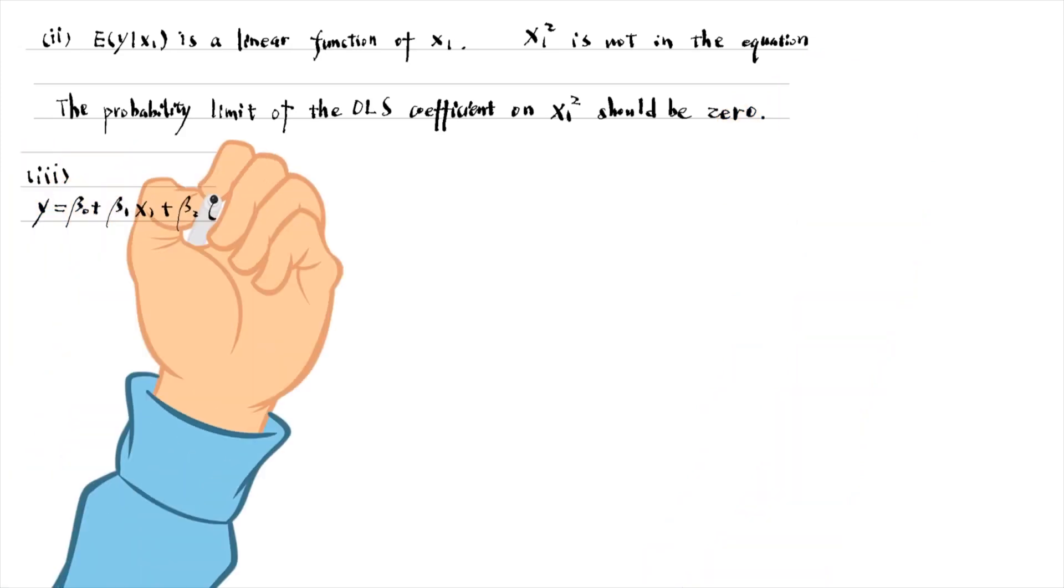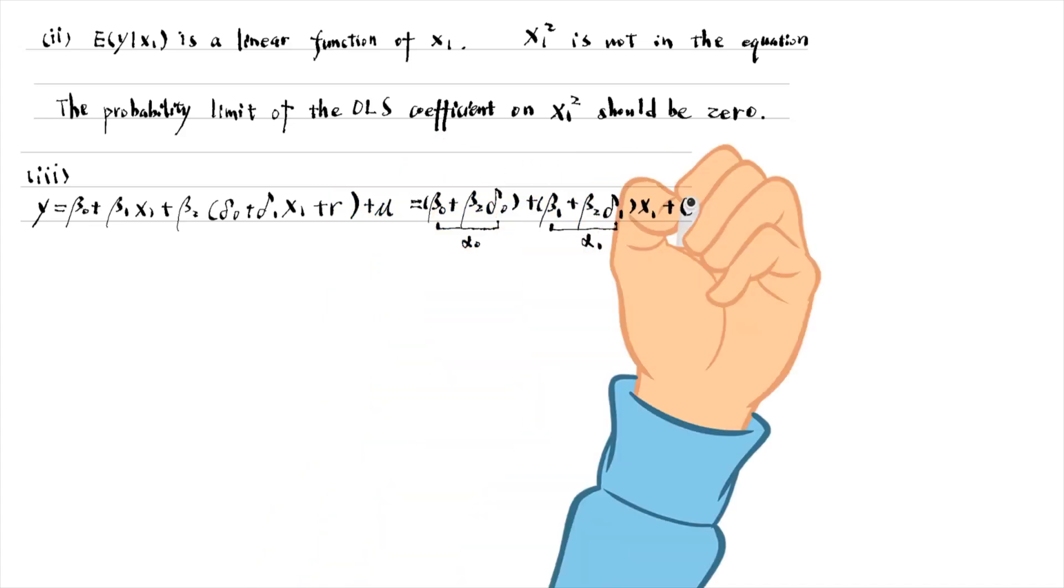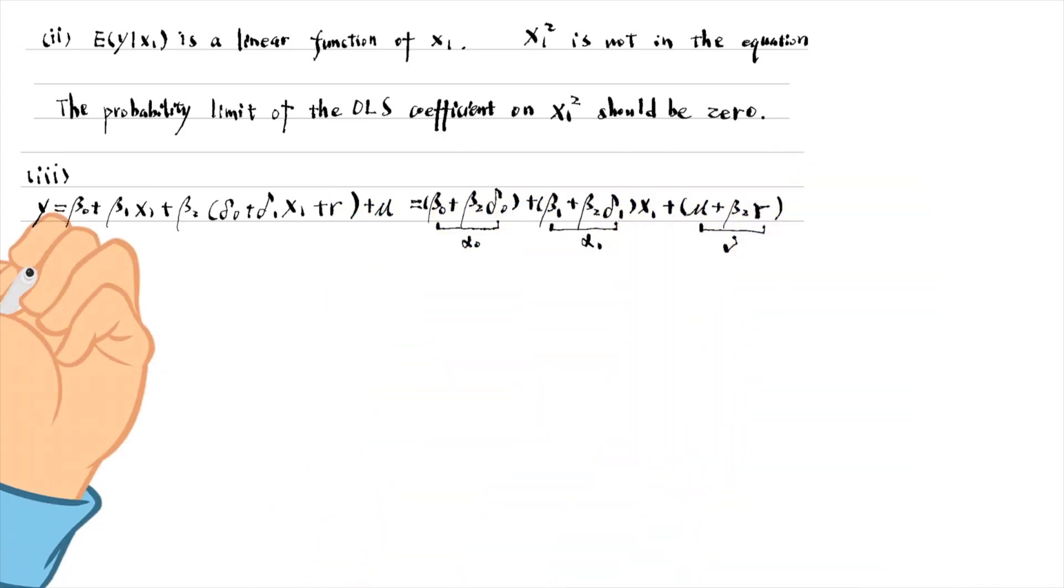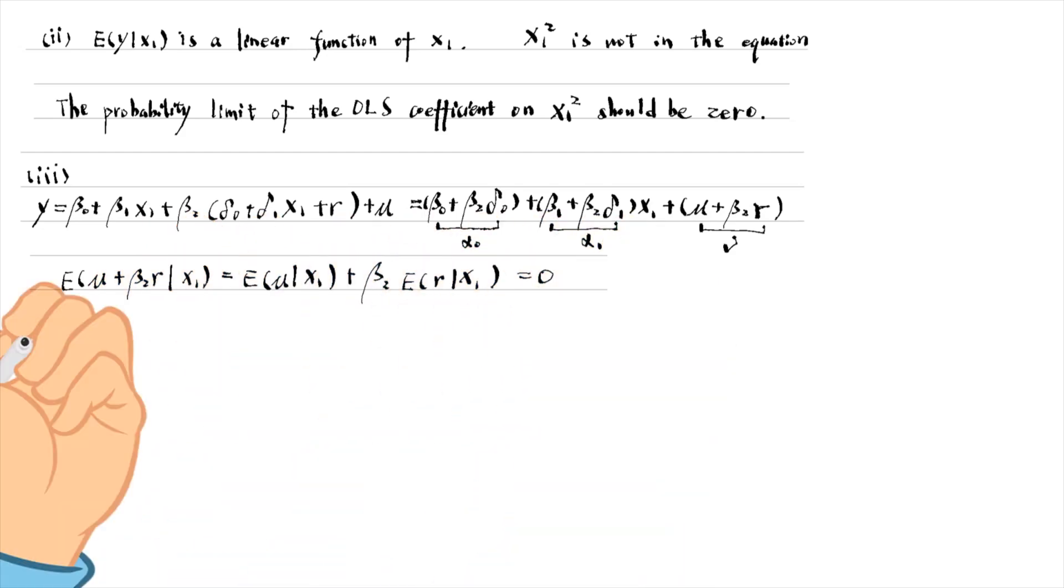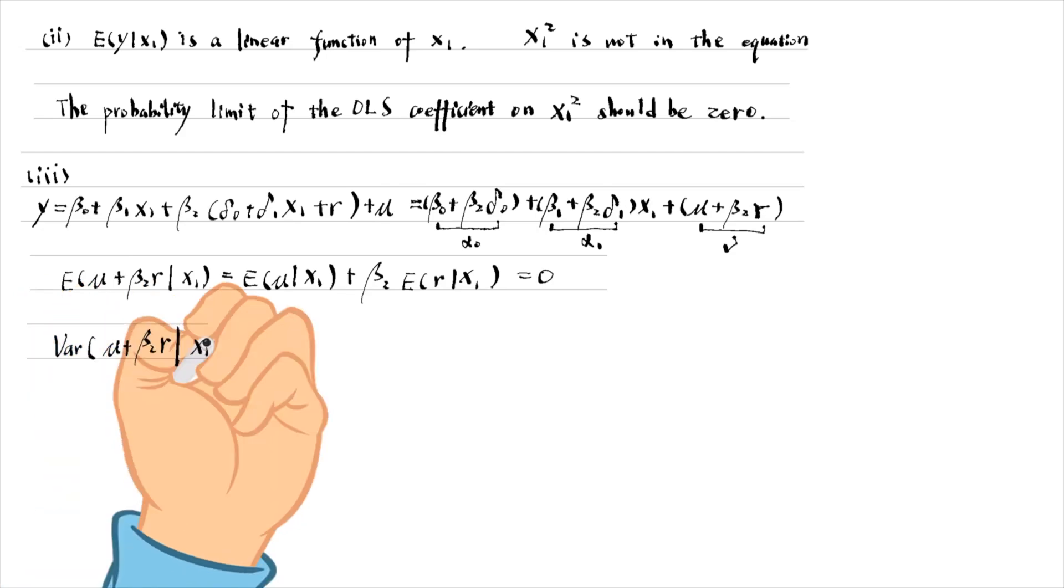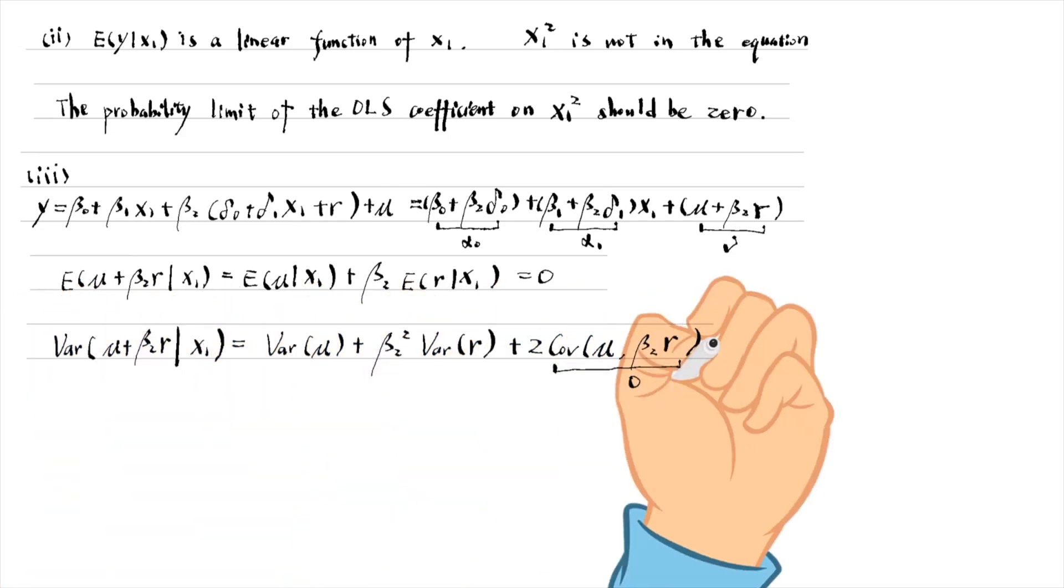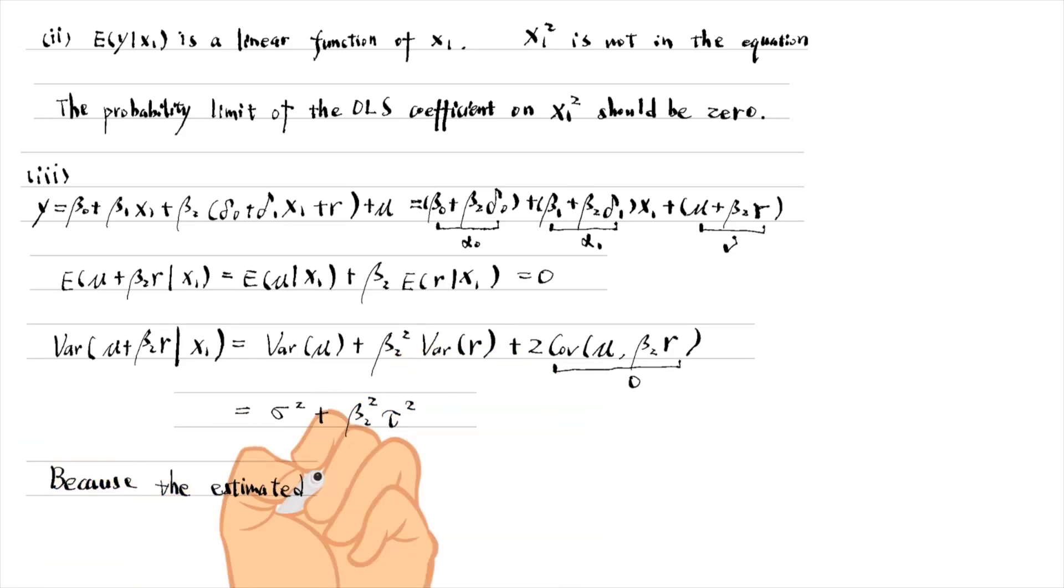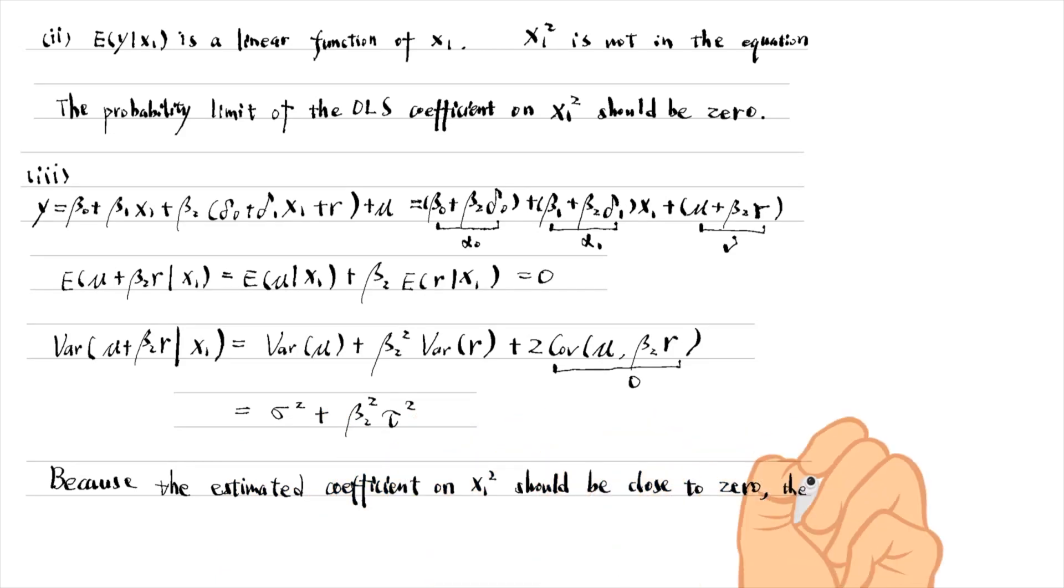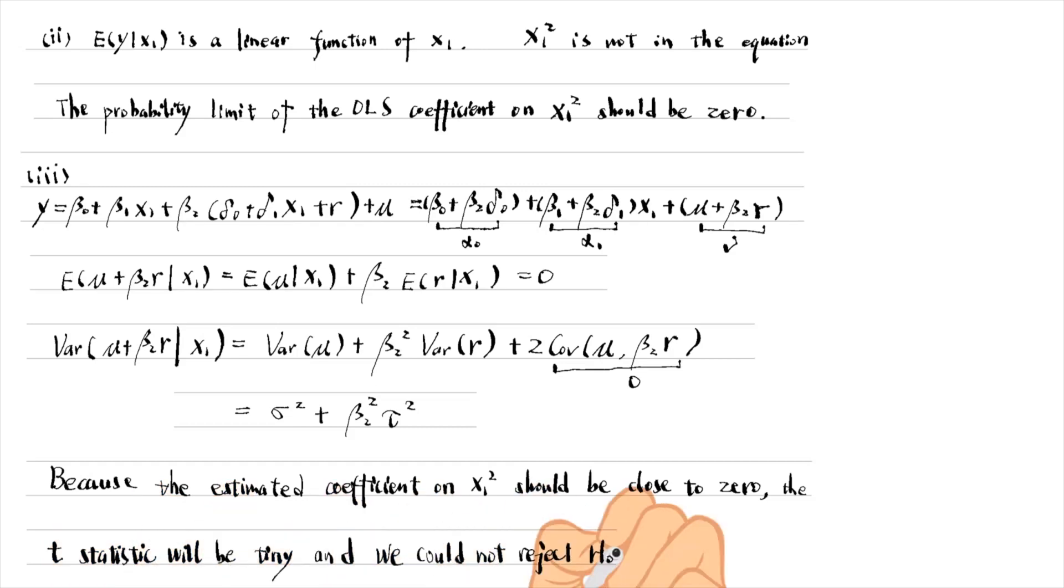For part 3, we have derived the expression of y in part 1. We can show that the expected value of the composite error conditional on x1 is 0. The variance of the composite error term conditional on x1 is sigma squared plus beta2 squared times tau squared. Because the estimated coefficient on x1 squared should be close to 0, the t statistic will be tiny and we could not reject the null hypothesis of 0 coefficient on x1 squared.